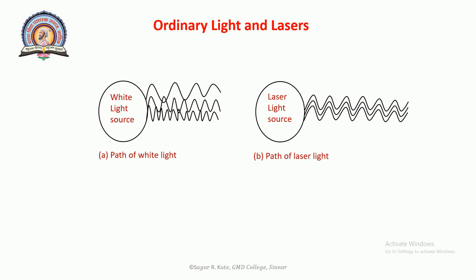Second, ordinary light is mostly unpolarized, whereas light from laser is polarized, meaning all radiation are oscillating in the same direction. Hence, laser light is highly directional.